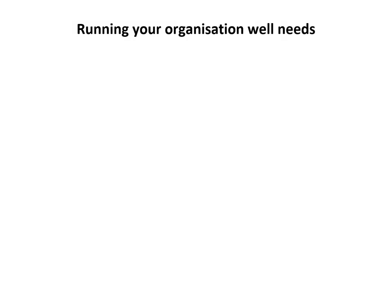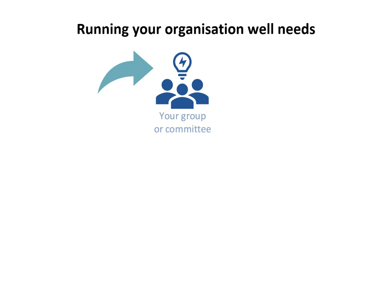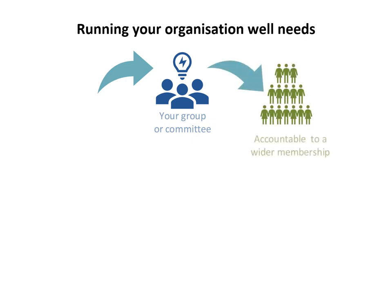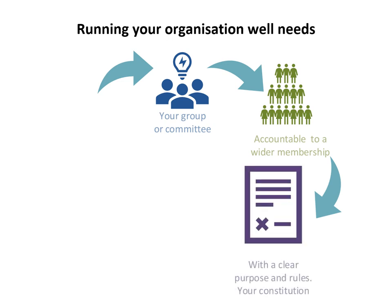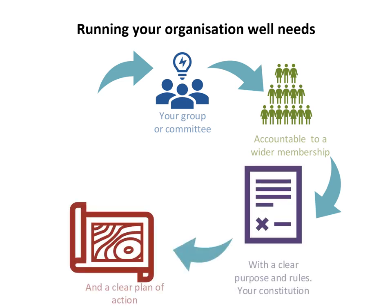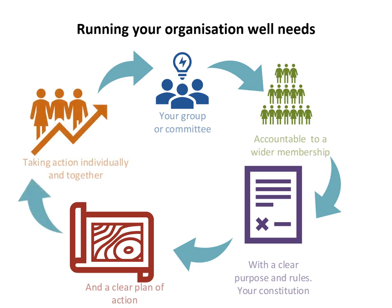In summary, running your organisation well needs a group or committee who are willing to work together to get things done and who are accountable to their wider membership, taking responsibility for their decisions and actions and enabling dialogue with their community. You'll need a clear purpose, a set of rules, and a clear plan of action — Module 4 can support you to develop this. And lastly, you'll need to agree who and how you'll take action, either individually or together.